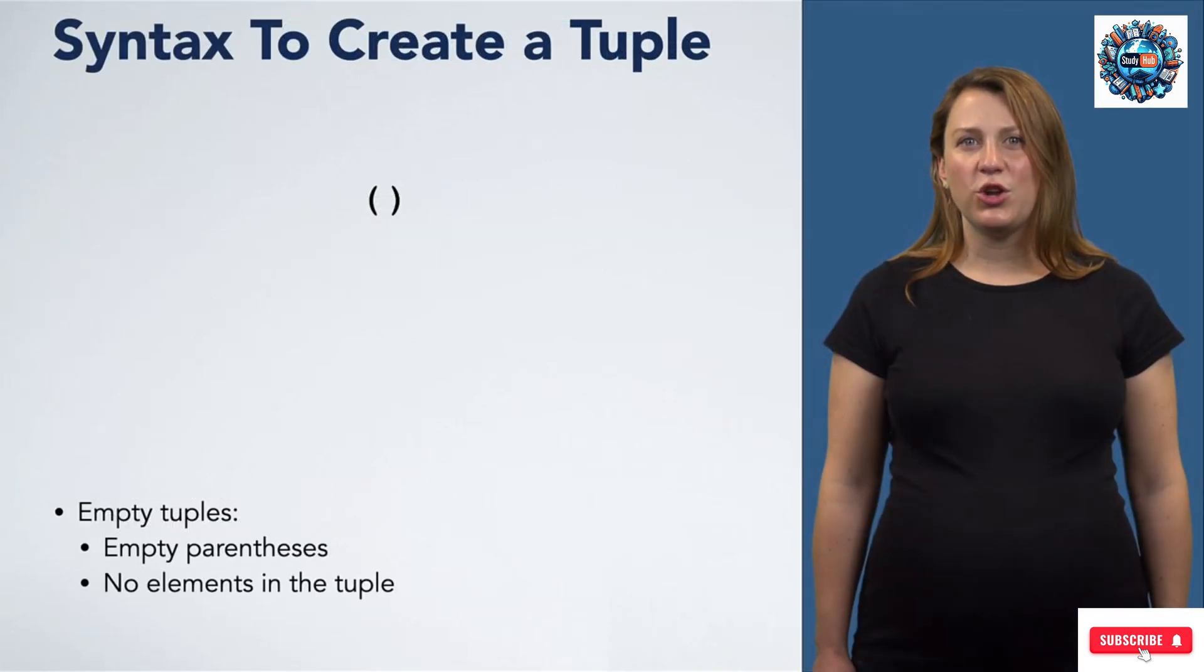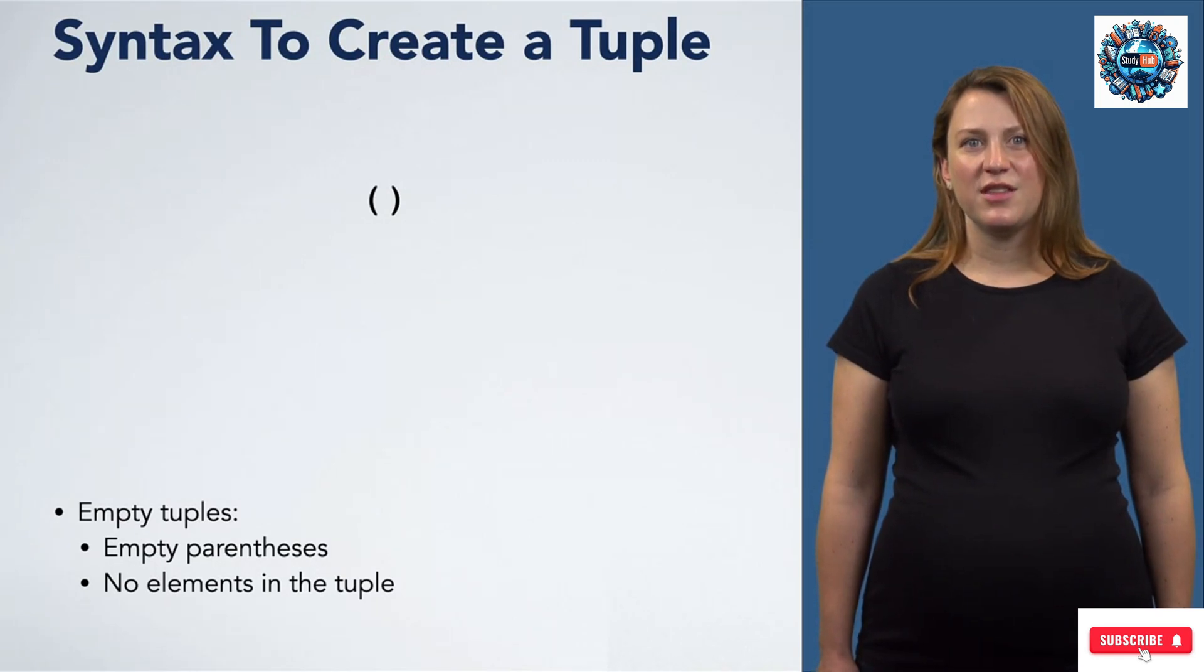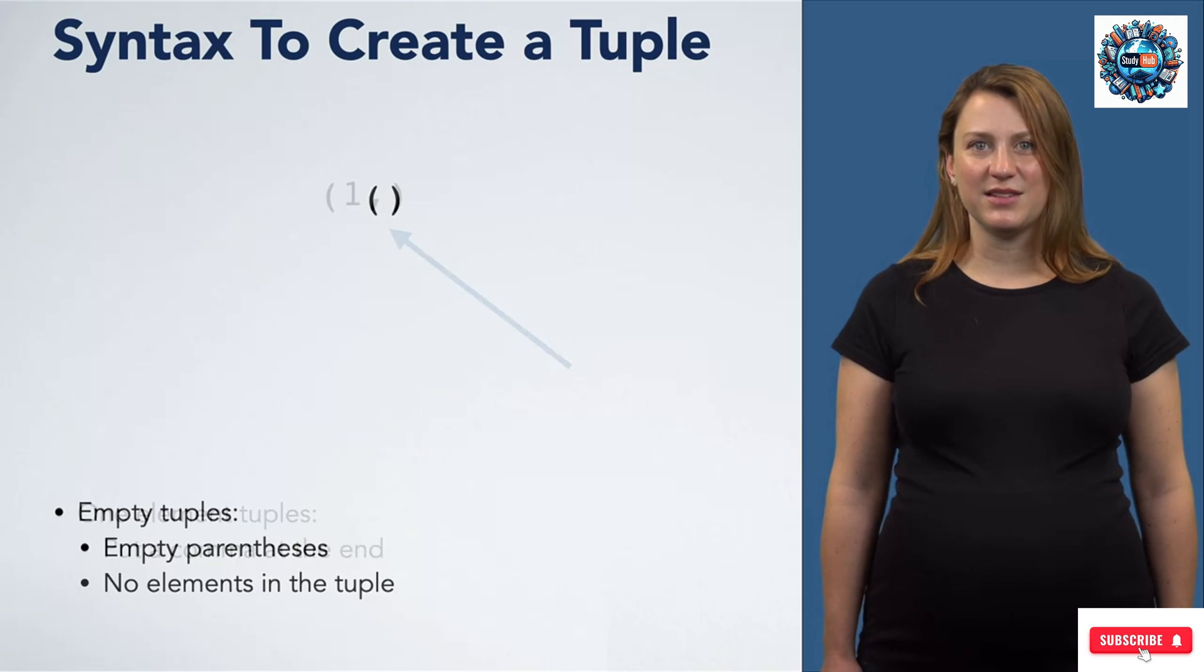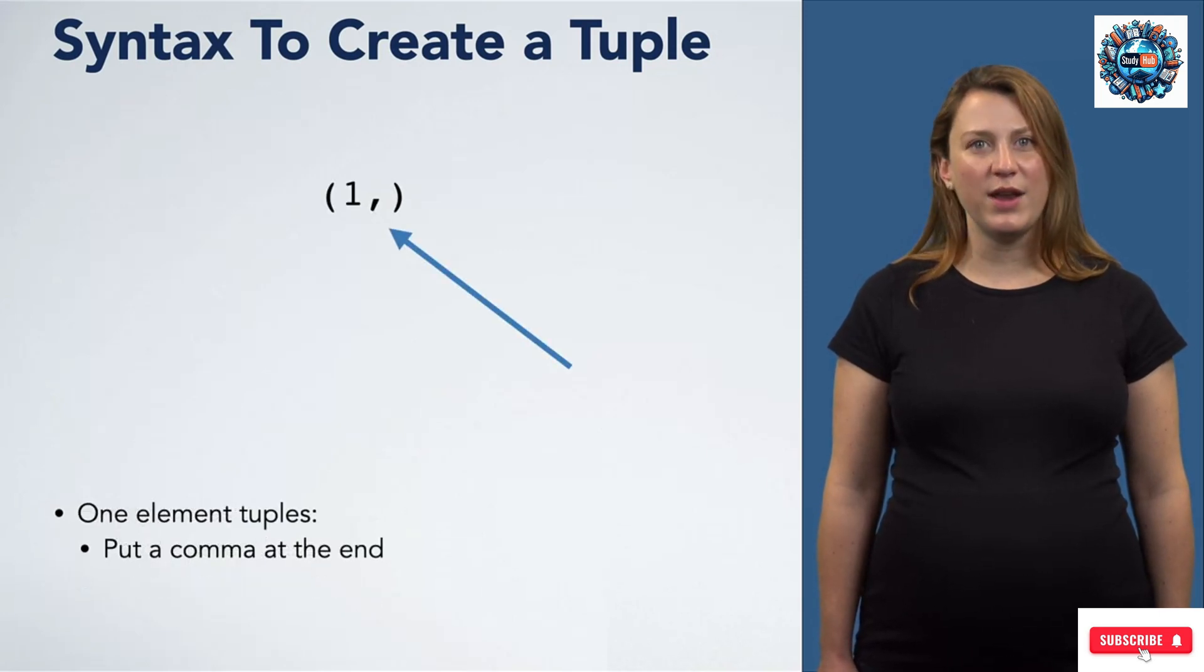There are a few unusual cases for tuple creation. These are not as important as the others, but we mention them for completeness. You can make an empty tuple by writing empty parentheses. This tuple has no elements inside it. If you ever want to write a one-element tuple, you need to put a comma at the end so that Python can distinguish it from just having parentheses for order of operations.